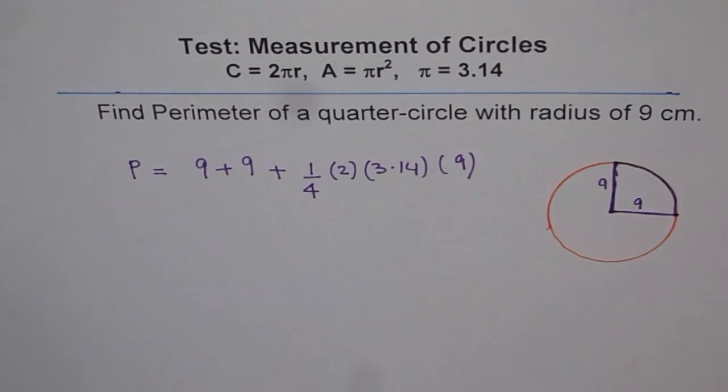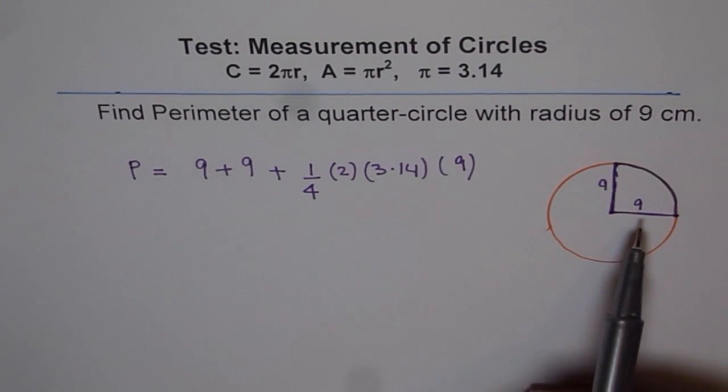That is the perimeter of quarter of a circle with radius of 9 cm. Do you understand? So this is the quarter. I have seen many students making a mistake of not adding these 9s.